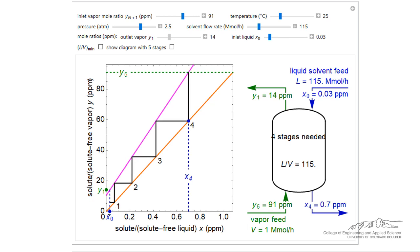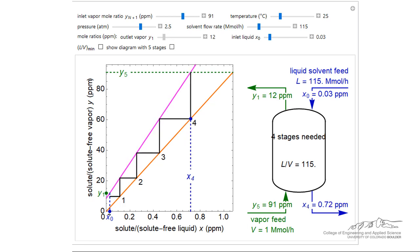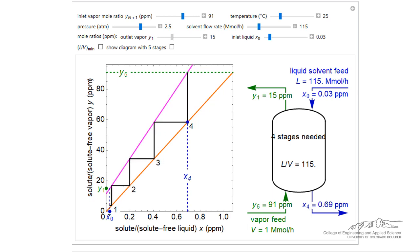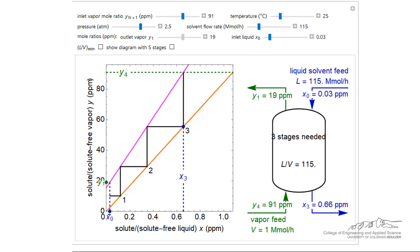Finally, the dynamic simulation allows us to vary the inlet and outlet compositions in the vapor. Again, note how the anchor point on the operating line changes and note the impact on the number of theoretical stages required.